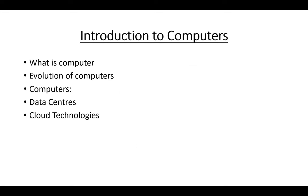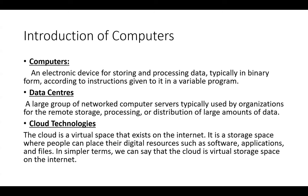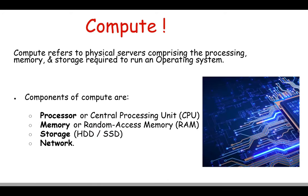A computer is made up of a combination of different hardware components. The definition: a computer is an electronic device for storing and processing data, typically in binary form, according to instructions given in a variable program. The main components are: processor, memory (RAM — random access memory), and storage, such as hard disks or SSDs.